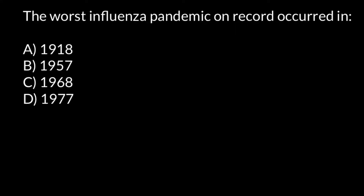Hello and welcome to Nikolai's Genetics Lessons. Today's question is: the worst influenza pandemic on record occurred in — and you have to choose the correct answer. Though I know most of you know the correct answer, I still recommend you watch this video to the end because I'm sure you're going to learn something new today.